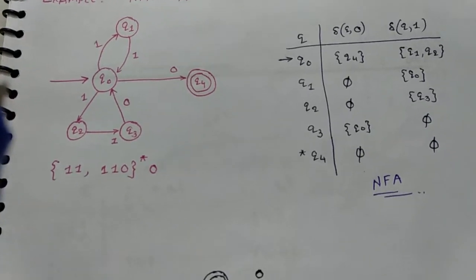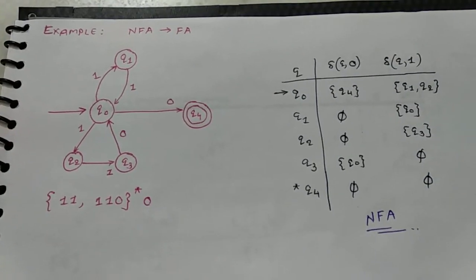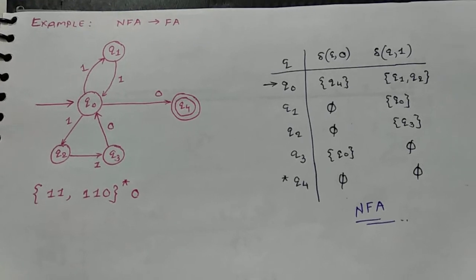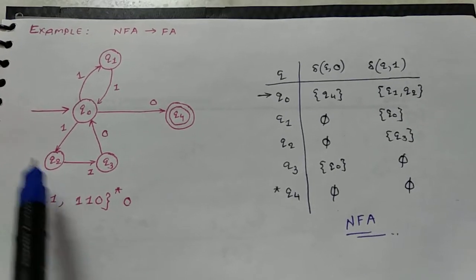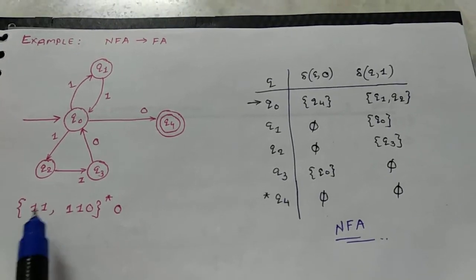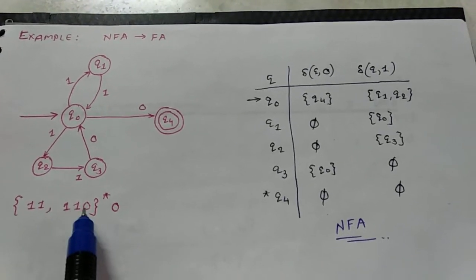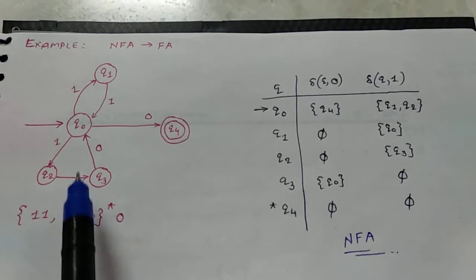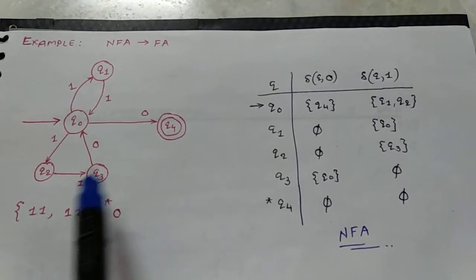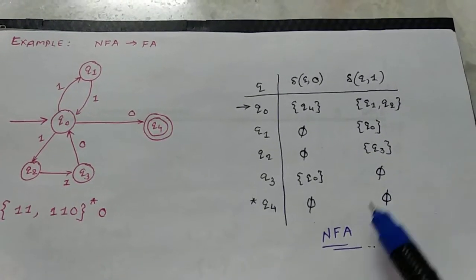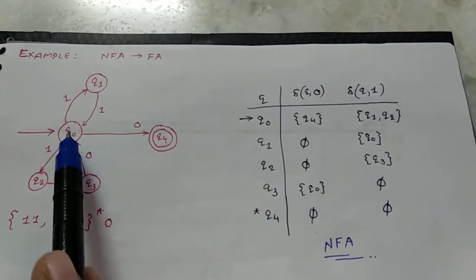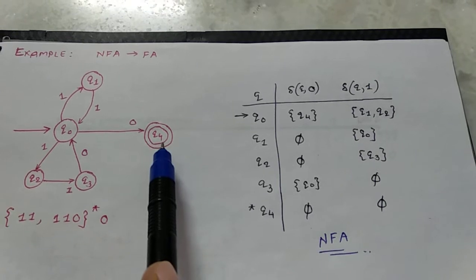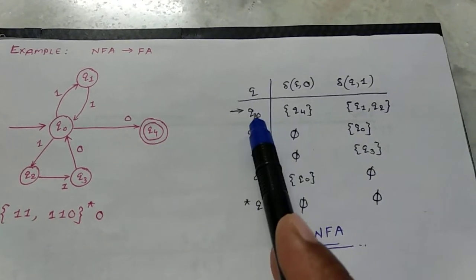Hello friends, today I discuss an example of NFA to FA conversion. In this example, NFA is given for 11 comma 110 star 0. According to this NFA, I write the transition table. For NFA, q0 to 0 reaches at state q4.